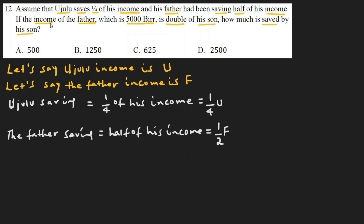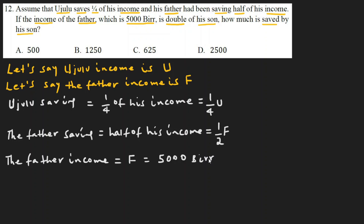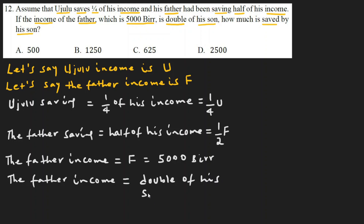Next piece of information: if the income of the father, which is five thousand birr — so the father's income F is equal to five thousand birr. Additionally, the father's income is double of his son's income, meaning F equals double of Ujulu's income, which is twice U.